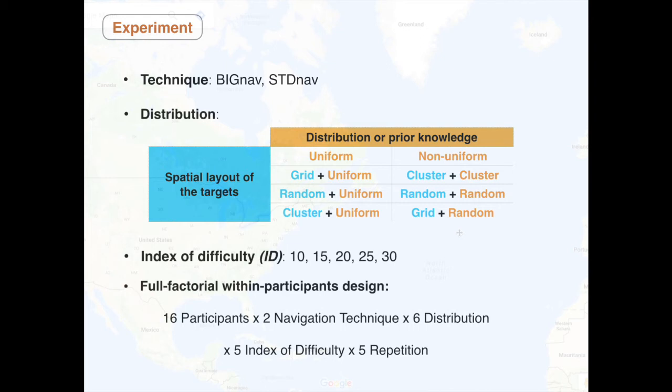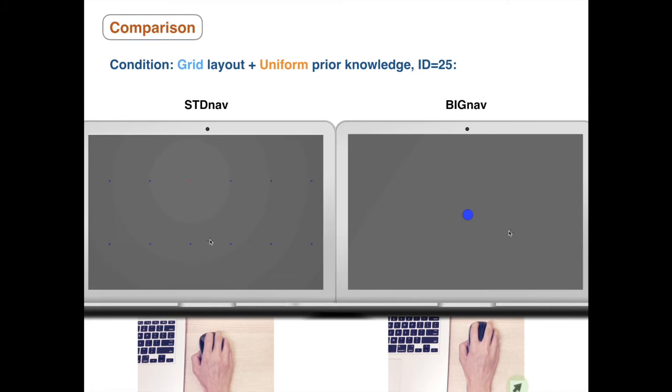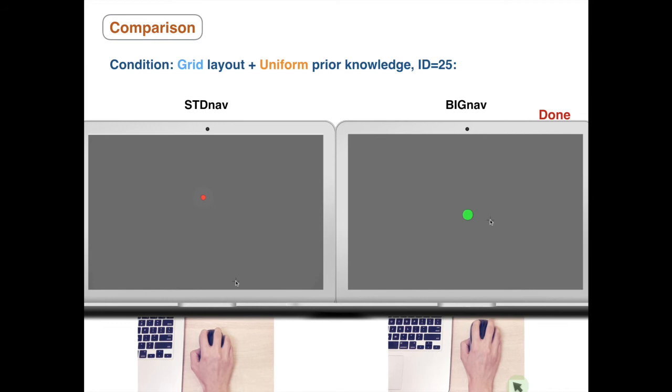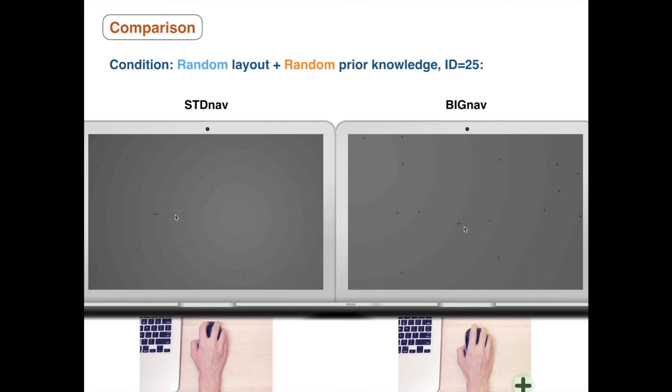With a uniform distribution, meaning that Big Nav does not have prior knowledge about the user's goal, Big Nav is 20% faster than standard navigation. When Big Nav has prior knowledge of the possible user's goal, Big Nav is 30% faster.